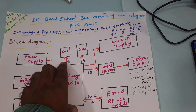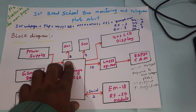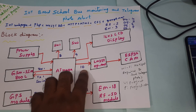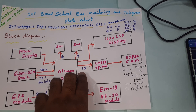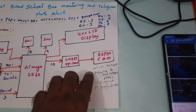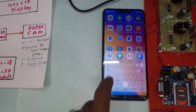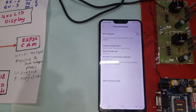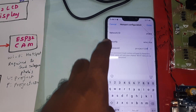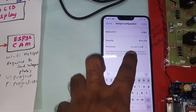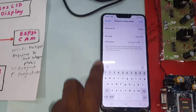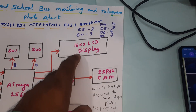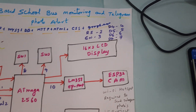SW1 and SW2 — bus arriving and bus trouble switches — are connected to GPIO pins 8 and 9. The ESP32 camera module is connected to GPIO pin 10 and requires a Wi-Fi mobile hotspot. The hotspot SSID is 'project' (lowercase) and the password is 'project1234' (all lowercase, no spaces). The 16x2 LCD display is connected to RS, Enable, D4, D5, D6, D7.